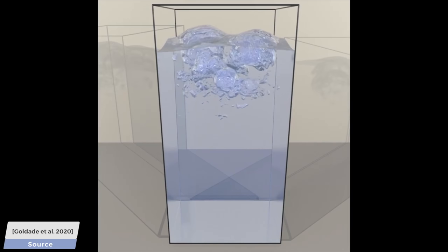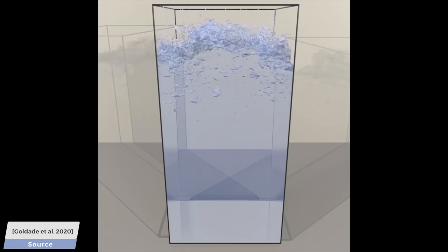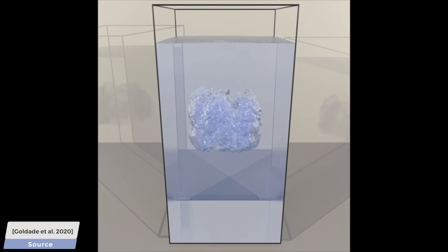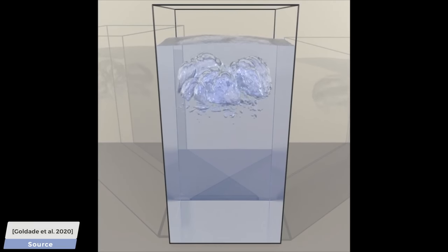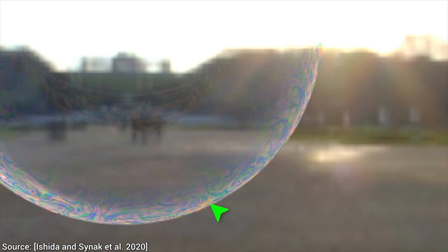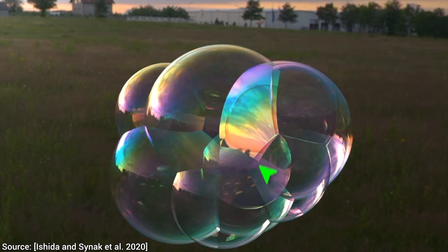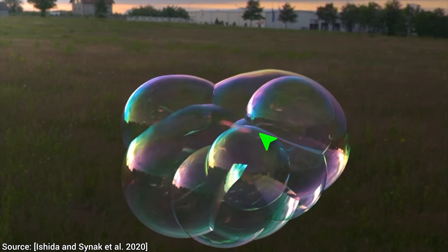So, what about today's paper? Are we going even larger, with hundreds of thousands, or maybe even millions of bubbles? No — we are going to take just one bubble, or at most a handful, and have a real close look at a method capable of simulating these beautiful, evolving rainbow patterns.